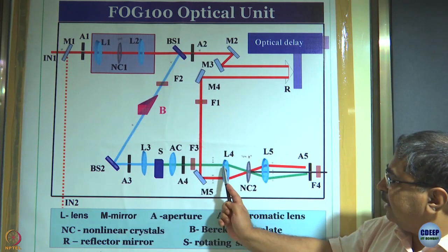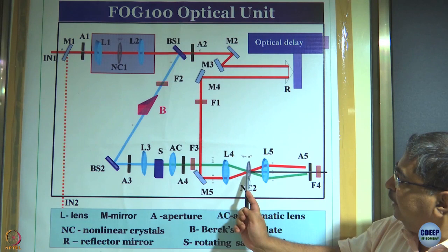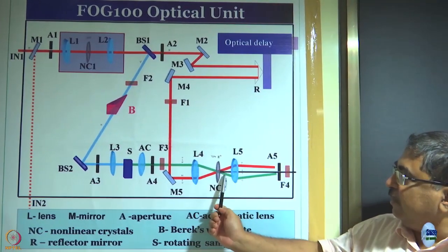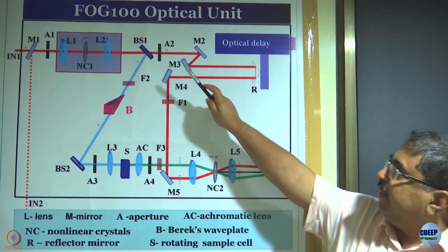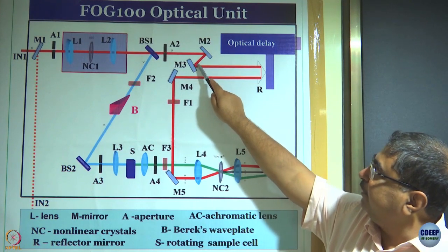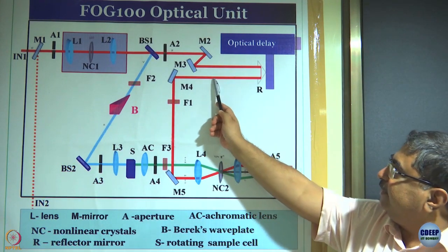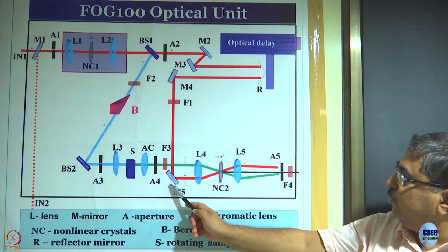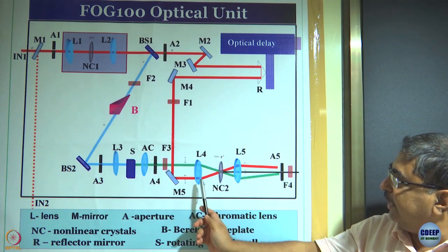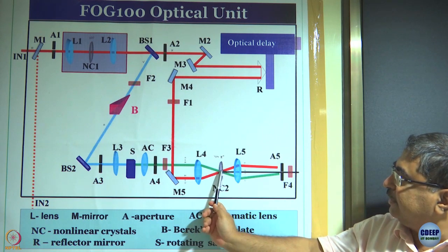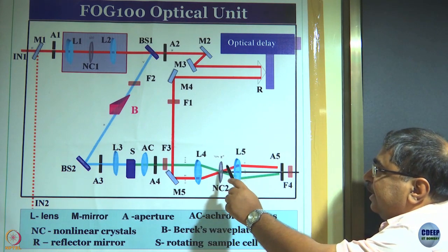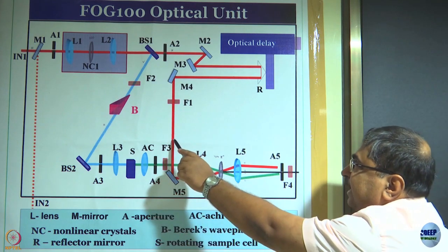Fluorescence from the sample is collected by another lens, goes through a long pass filter F3 which blocks the excitation blue light but passes the fluorescence light. This fluorescence light is focused by lens L4 onto another nonlinear crystal NC2 — the sum frequency generation crystal. Meanwhile, the red gate light that passes through BS1 hits mirrors M2, M3, and gets retroreflected via mirrors M4 and M5.